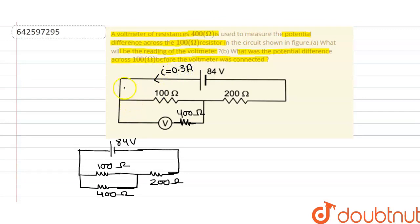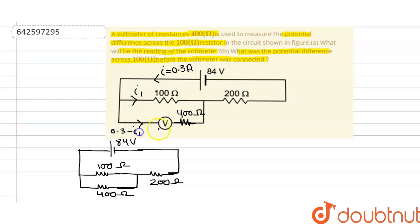Now this current gets distributed among the two parallel resistors — 100 ohm and 400 ohm. Let the current flowing through the 100 ohm be i1, so the current flowing through the 400 ohm will be 0.3 minus i1. We will apply Kirchhoff's loop law for this circuit, going in the clockwise direction.